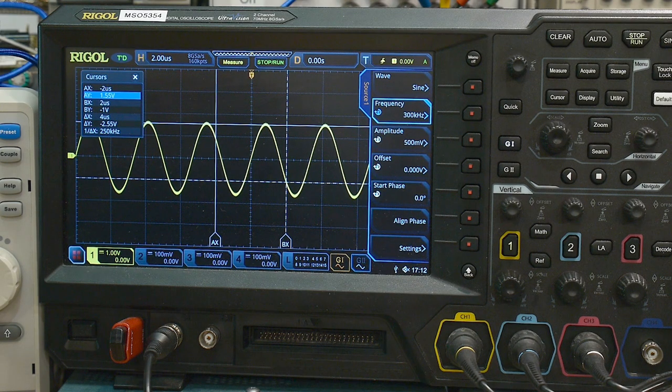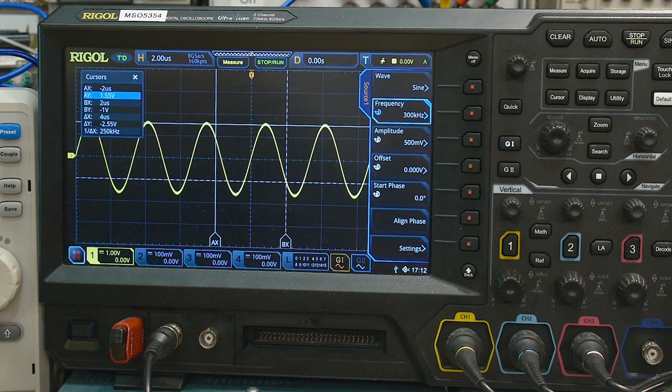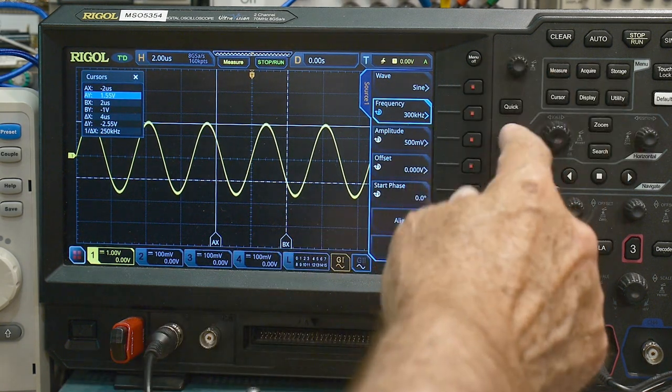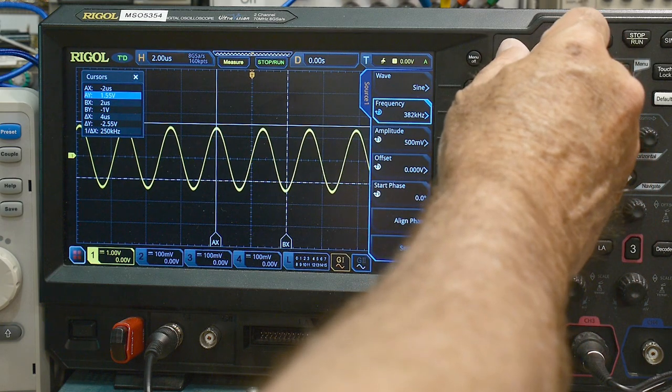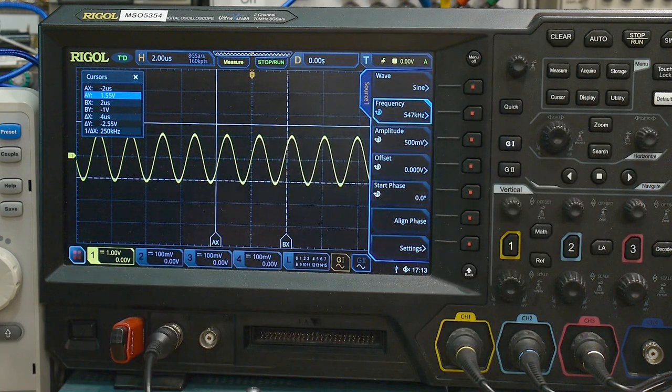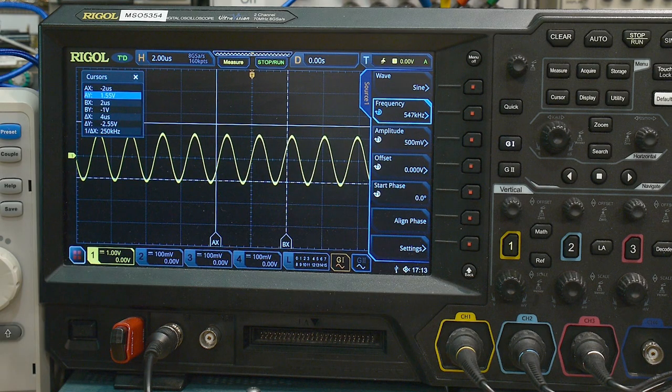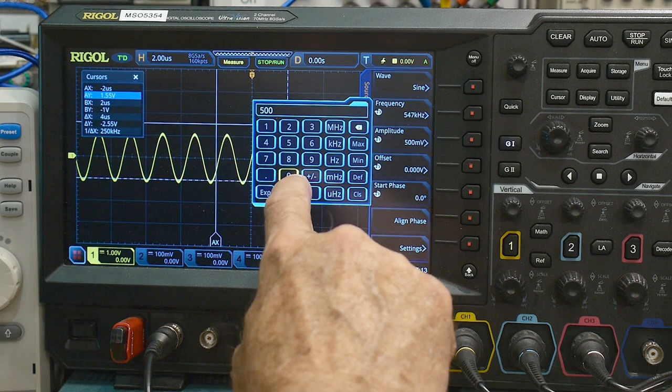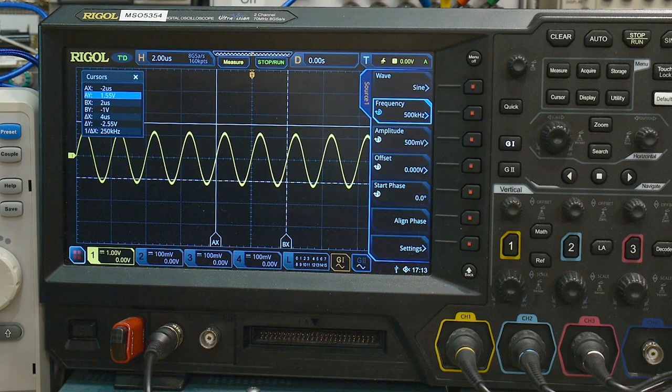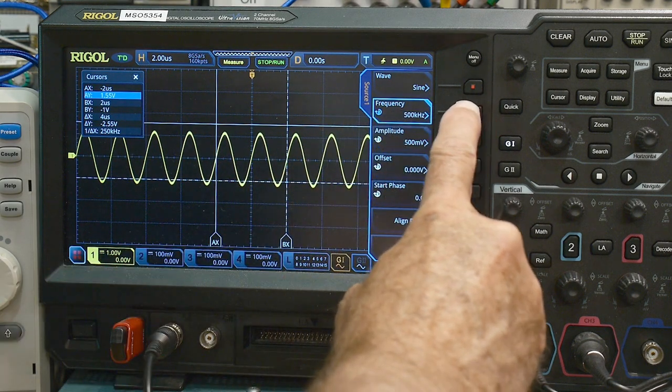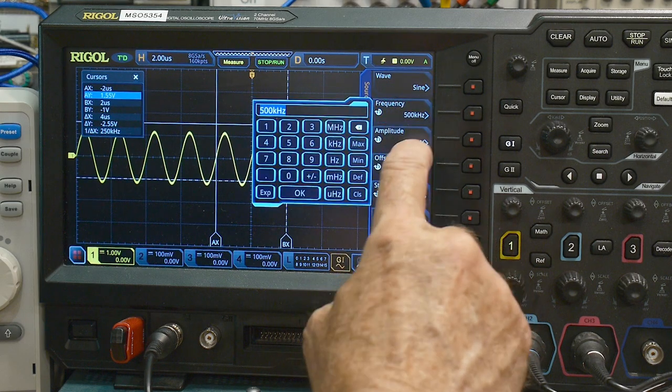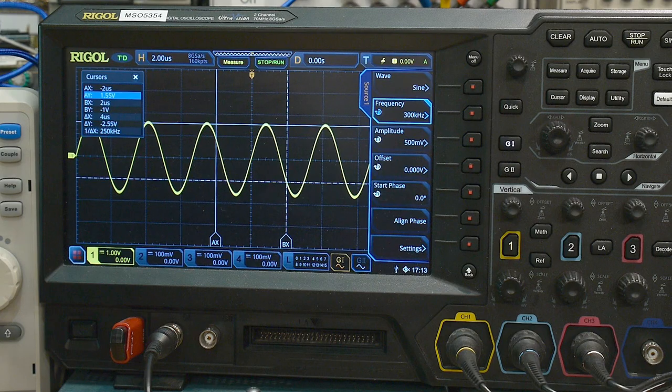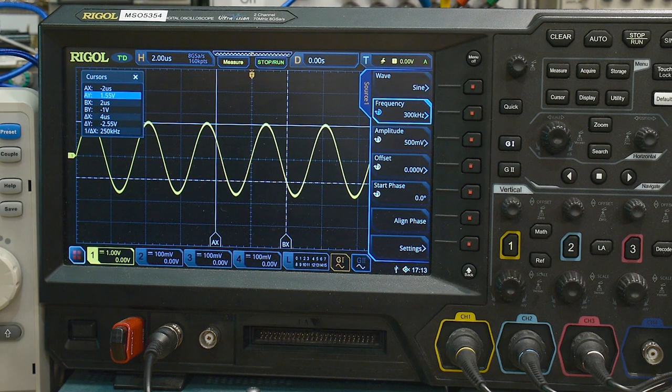But yeah, it's getting up to 300 kilohertz with a gain of 10, so 300 kilohertz times 10 is 3 megahertz. And then if we go past that, here's 547 kilohertz, you can see that it's much lower than that. Let's see, let's go to 500 kilohertz, yes it's way down. And then if we come back to 300 kilohertz, there it is. So yeah, it's a nice fast part.